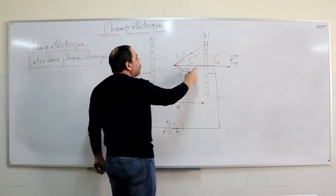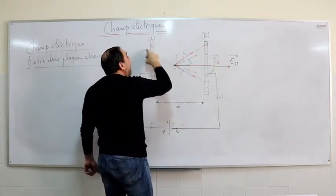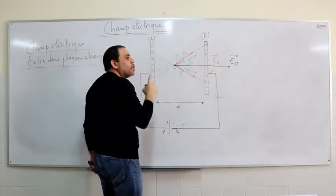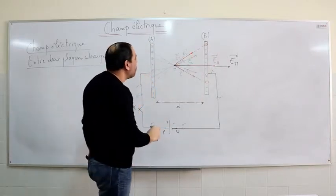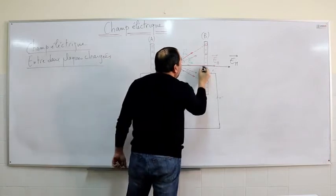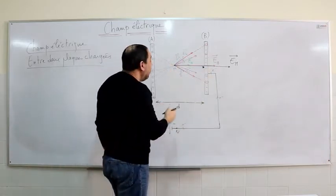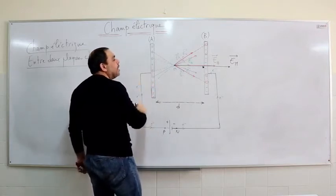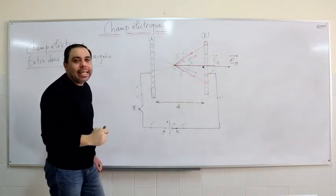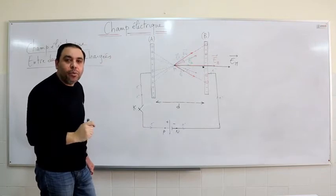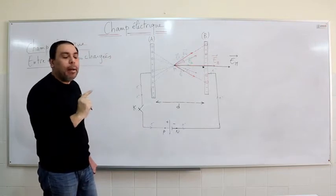The field vector EM created by the two plates is perpendicular to the plates and is directed from the positive plate to the negative plate.